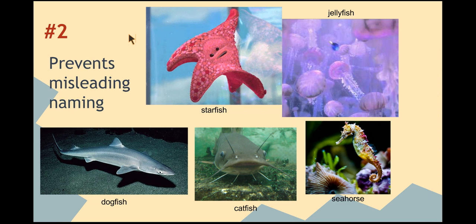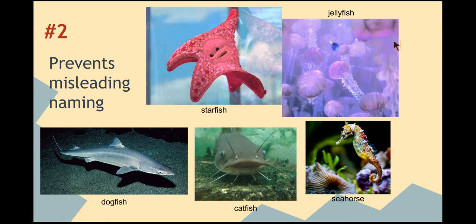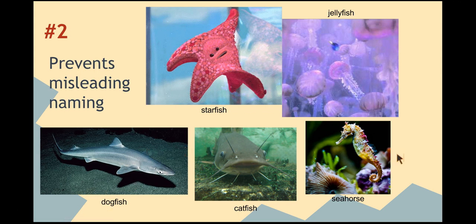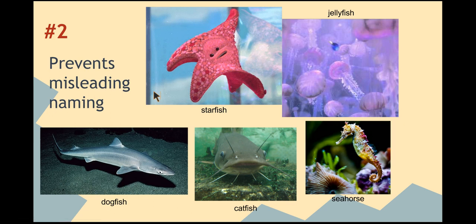The second thing is that it prevents people from assigning misleading names to animals. For example, starfish and jellyfish are not fish — they're part of a family of animals known as cnidarians. And then there's dogfish, catfish, and seahorse. There was an interesting period in history where people thought there was an allegory for every land animal in the ocean, so they named ocean animals after land animals. But dogfish is not related to a dog, catfish not to a cat, and seahorse not to a horse. Our scientific naming system is based on evolutionary relationships and DNA, so it doesn't allow these false associations.